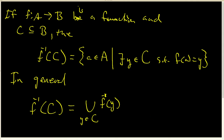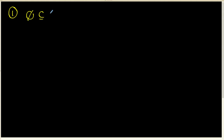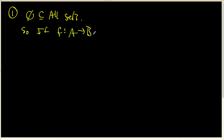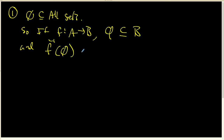The final thing to look at is a few conventions and facts about pre-images. First, as a basic fact: the empty set is a subset of all sets. So if we have a function going from A to B, the empty set is certainly a subset of B, and the pre-image of the empty set is always going to be the empty set, since there is nobody in the empty set to get mapped to.